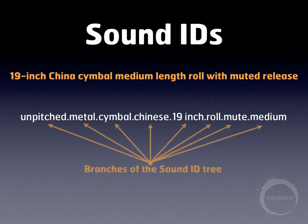This is known as a tree format, and each one of these descriptors is called a branch. There are thousands of these specific Sound IDs for the VDL Library alone, which is why the template and sound set development is a pretty involved process.